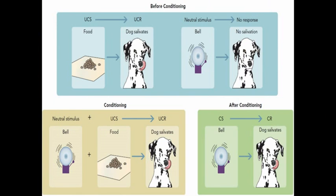As you can see here on the screen, this is Ivan Pavlov's experiment on the dog. There are three stages, as you can see: before conditioning, while conditioning, and after conditioning.